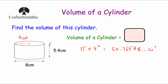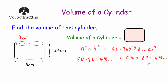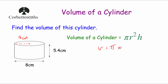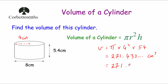That's the area of the cross section. Multiplying by the height of the cylinder — 5.4 — gives 271.433 centimetres cubed, or 271.4 centimetres cubed rounded to one decimal place. Make sure you put the correct units: volume is centimetres cubed, or metres cubed, or millimetres cubed and so on. Alternatively, using the formula: volume equals pi multiplied by 4 squared multiplied by 5.4, which gives the same answer of 271.4 centimetres cubed.